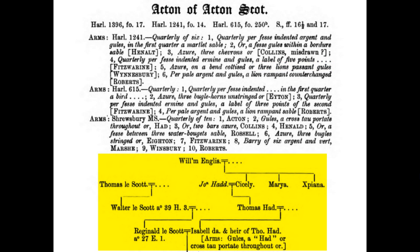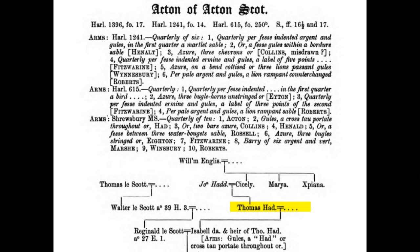Here is the pedigree. It starts out with William Inglis, who apparently had three daughters. One of the daughters had a son, Thomas. And Thomas had a daughter named Isabel, who married Reginald Scott. And this just goes on and on — the entire family's genealogy is listed in this book. And there are hundreds of these families. Pretty amazing stuff.